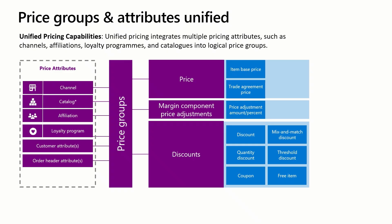When setting up a price group, you can link it to an attribute group that integrates various pricing attributes such as channels, catalogs, affiliations, customers, loyalty programs, and order header attributes. You have the flexibility to use these attributes individually or in combination with your price group. When setting up a price or margin adjustment through a trade agreement, you can post the journal using the price group, ensuring that the price adjustment targets all the attributes associated with your group. This allows businesses to develop more dynamic and targeted pricing strategies with precision.